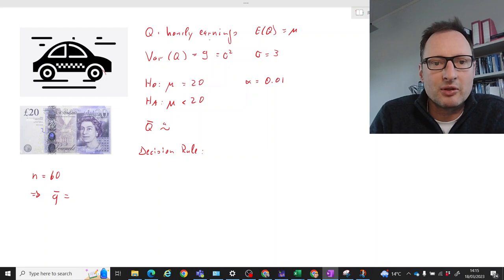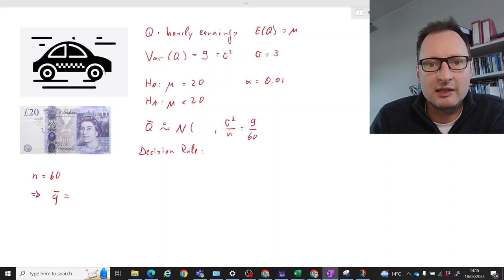So using the central limit theorem, because I don't tell you anything about the type of distribution, it's approximately normally distributed. We are having a sample size of 60 so fairly confident sample size. So the variance of that Q bar is going to be the variance of Q divided by n, so in our case that is 9 divided by 60, which equals 0.15.